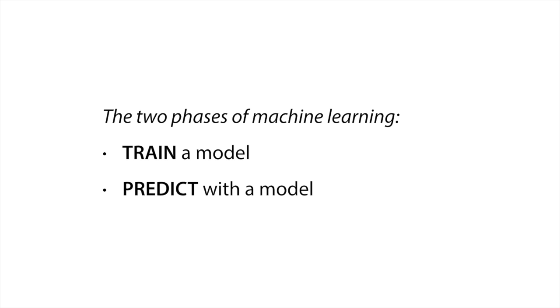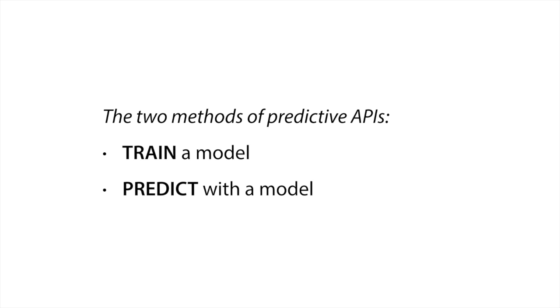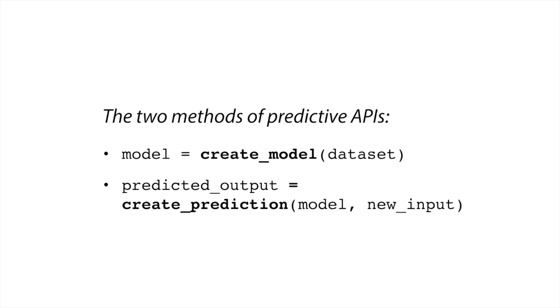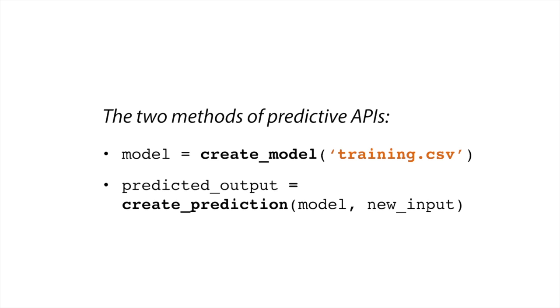There are two phases in machine learning — training and predicting — and there are two corresponding functions in predictive APIs. Usually you've got one to train a model and another one to predict with the model. That's the most technical slide I've got. You have a createModel function that takes in the dataset and a createPrediction function that takes in the model ID and the new input to get an output. It's as simple as that — you just need to provide good data, which can be a CSV file.